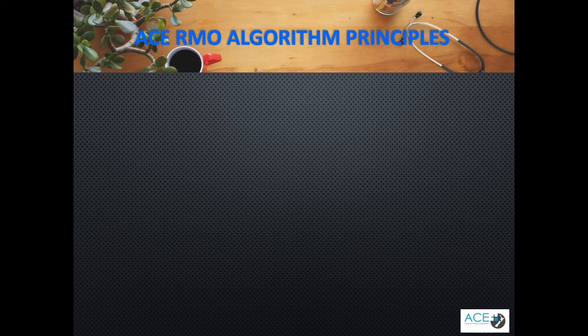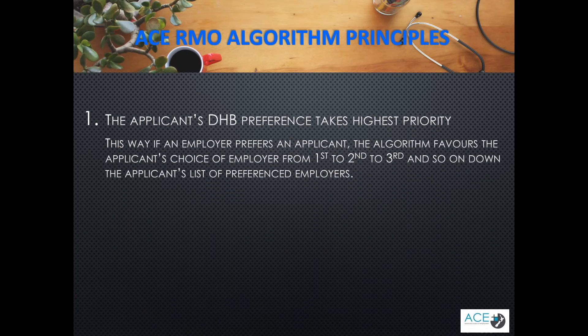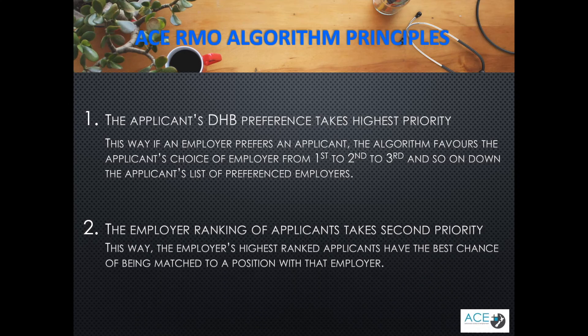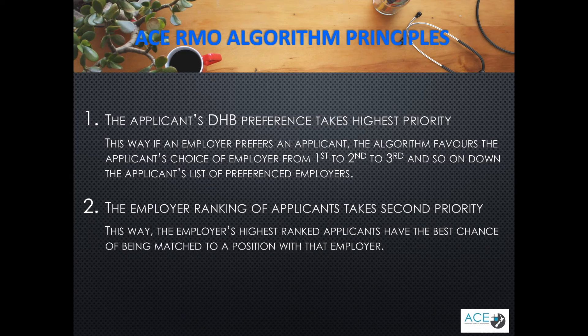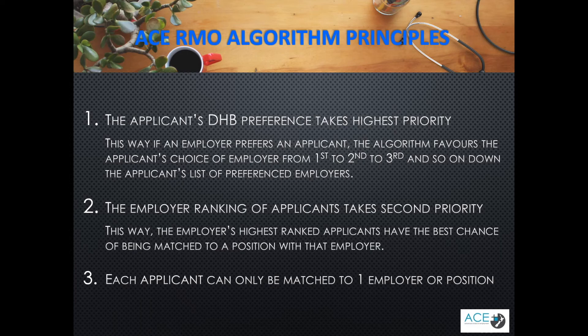We're going to step you through the ACE algorithm and a worked example of a match scenario. This is to give you the best understanding of how it works. The ACE algorithm follows three main priorities in this order: it first wants to match applicants to their highest preference DHB, and it then takes the DHB rankings of these applicants into consideration while ensuring each applicant is only matched to one DHB.